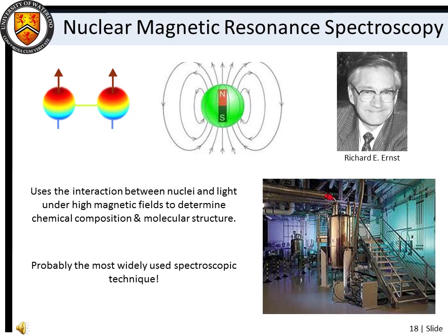The final topic we'll discuss in Chemistry 209 is Nuclear Magnetic Resonance, or NMR spectroscopy. NMR is probably the most widely used spectroscopic technique for determining molecular structure and chemical composition. One of the most common uses of NMR techniques is in magnetic resonance imaging, and you will learn how functional MRI is used in psychology research to map the brain.